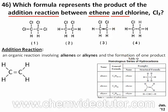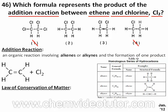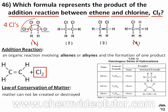Since ethene is reacting with chlorine, which is Cl2, we can automatically get rid of choices one and four. The reason for this is due to the law of conservation of matter, which states that matter cannot be created or destroyed. So if we only began with two chlorines, then we can't gain or lose any more than we started with.